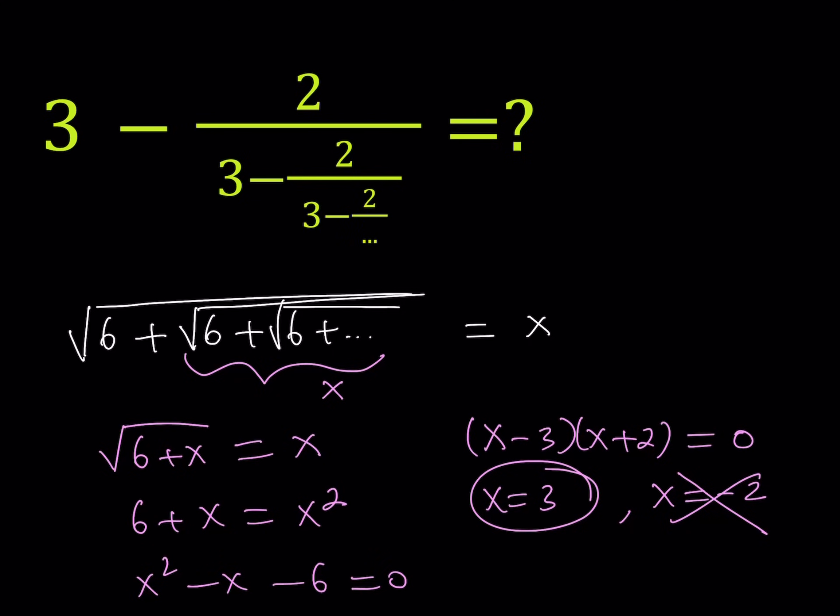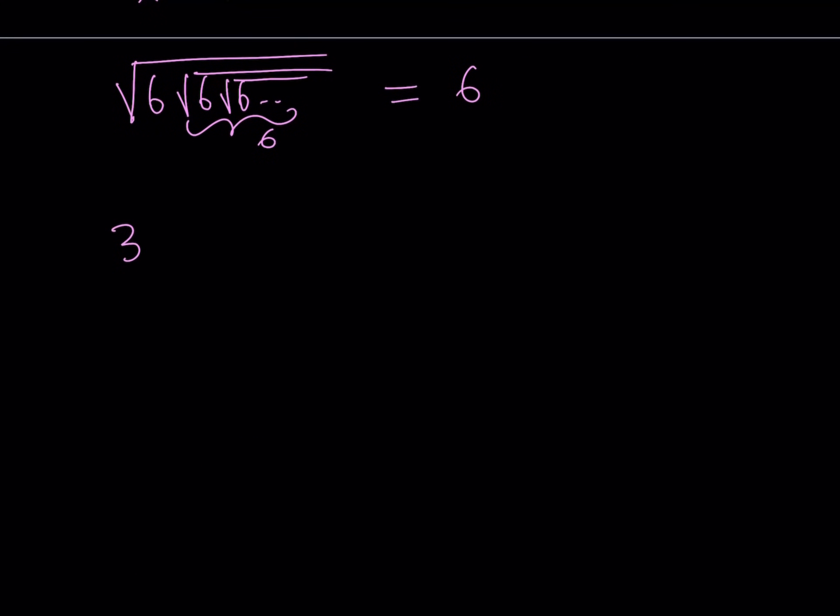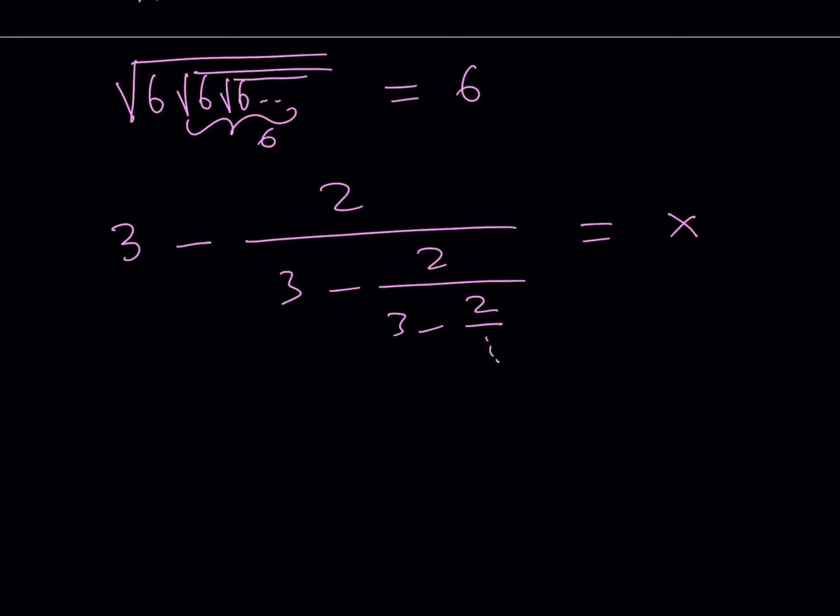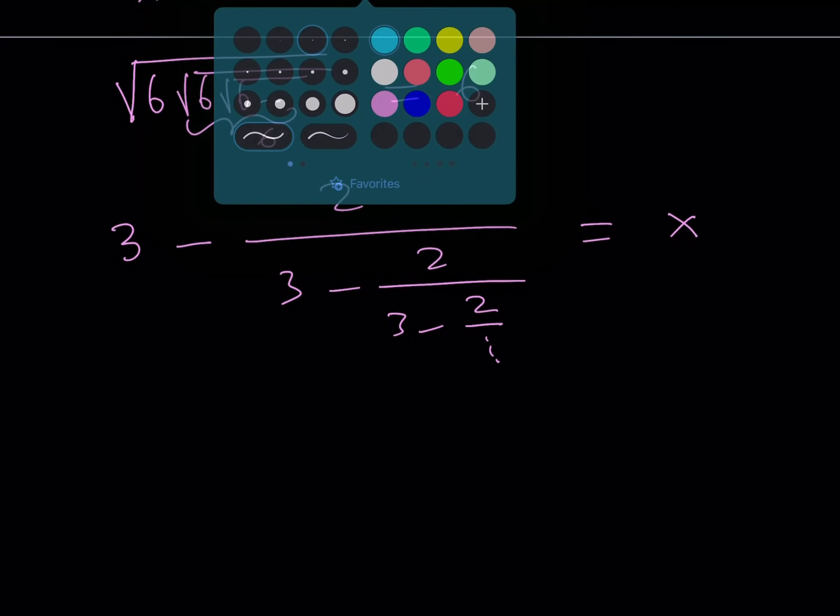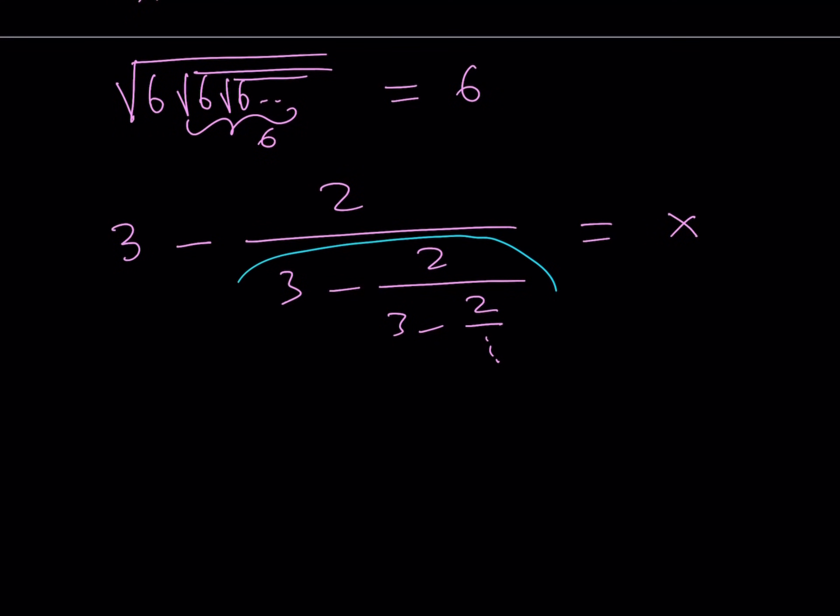Well, the whole thing here, let me rewrite it. So we have 3 minus 2 over 3 minus 2 over 3 minus 2 over dot dot dot. So you would call the whole thing x. And then what would happen after that? You would see that this contains itself. So this is the same thing. So that means it's also x.